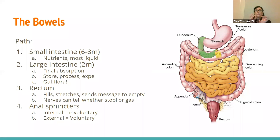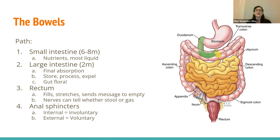Food comes out of the stomach and right into the duodenum, which is part of the small intestine. The small intestine is small in diameter — which is why it's called small — but it's incredibly long, six to eight meters. It is responsible for about 75% or more of actual nutrition absorption and most liquid absorption. That is where the real digestive absorption portion of our digestion happens. Small intestine: very, very important.